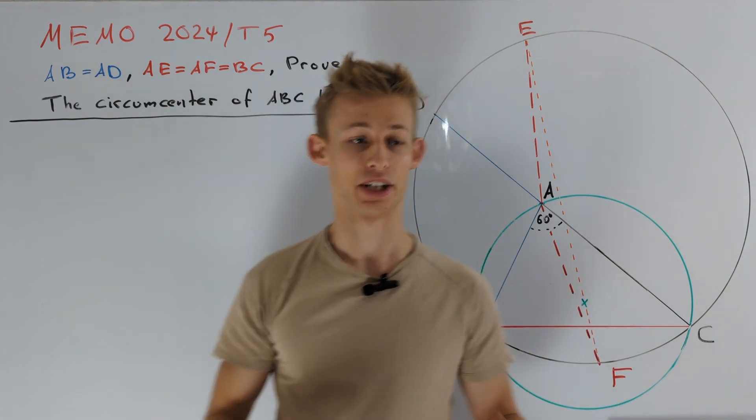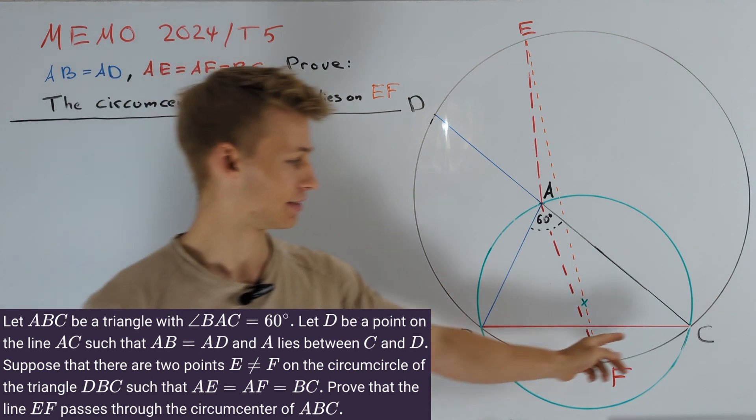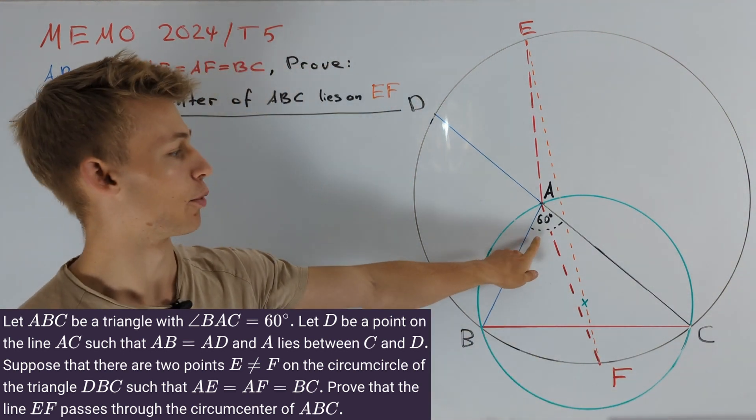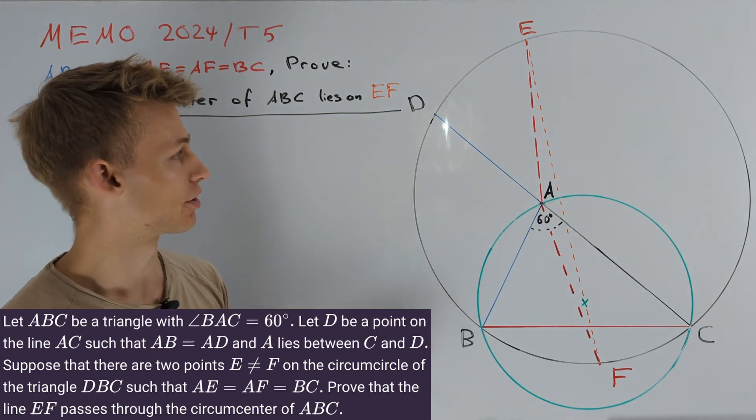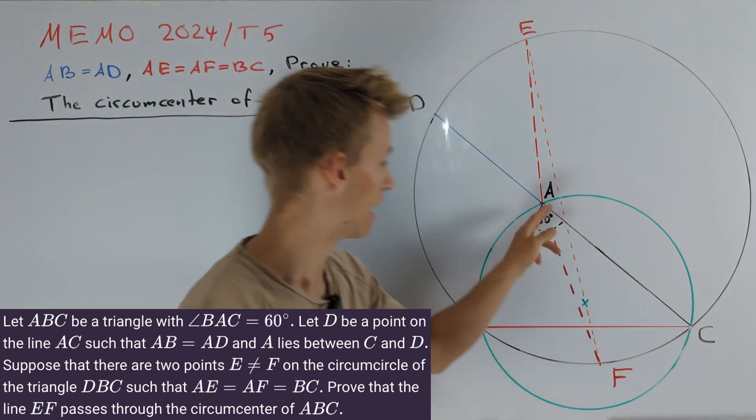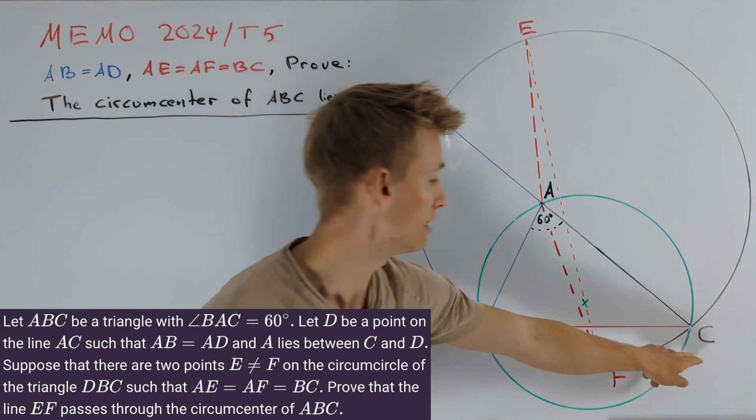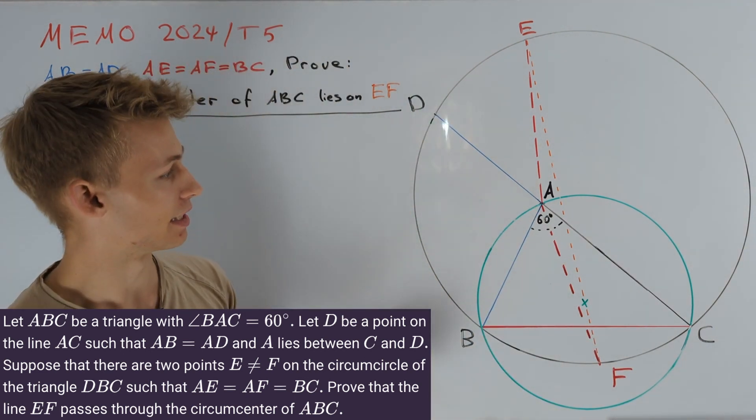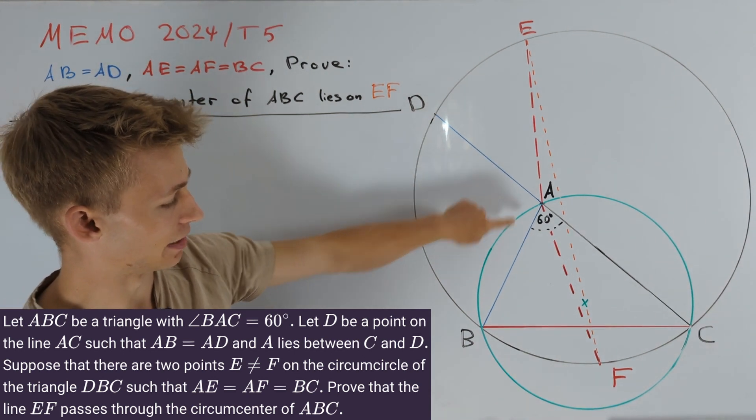Let's take a look at the picture of this problem. We have given a triangle ABC such that the angle at point A is equal to 60 degrees. Now we construct a point D on line CA such that the point A lies between D and C and in such a way that the segment AD has equal length to the segment AB.